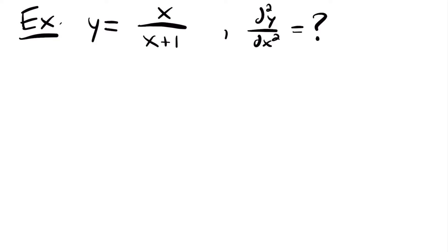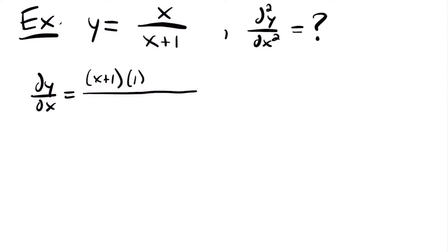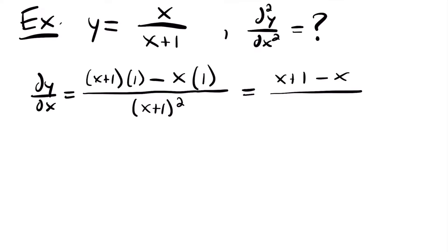Let's start by finding the first derivative, and then we'll find the second one. dy/dx is equal to — using the quotient rule — the bottom function x plus 1, times the derivative of the top function, which is 1, minus the original top function x times the derivative of the bottom function, which is also 1, since the derivative of x is 1 and the derivative of 1 is 0. The denominator is the bottom function squared: x plus 1 squared. Simplifying: x plus 1 minus x over x plus 1 squared. The x terms cancel, giving us 1 divided by x plus 1 squared as our first derivative.